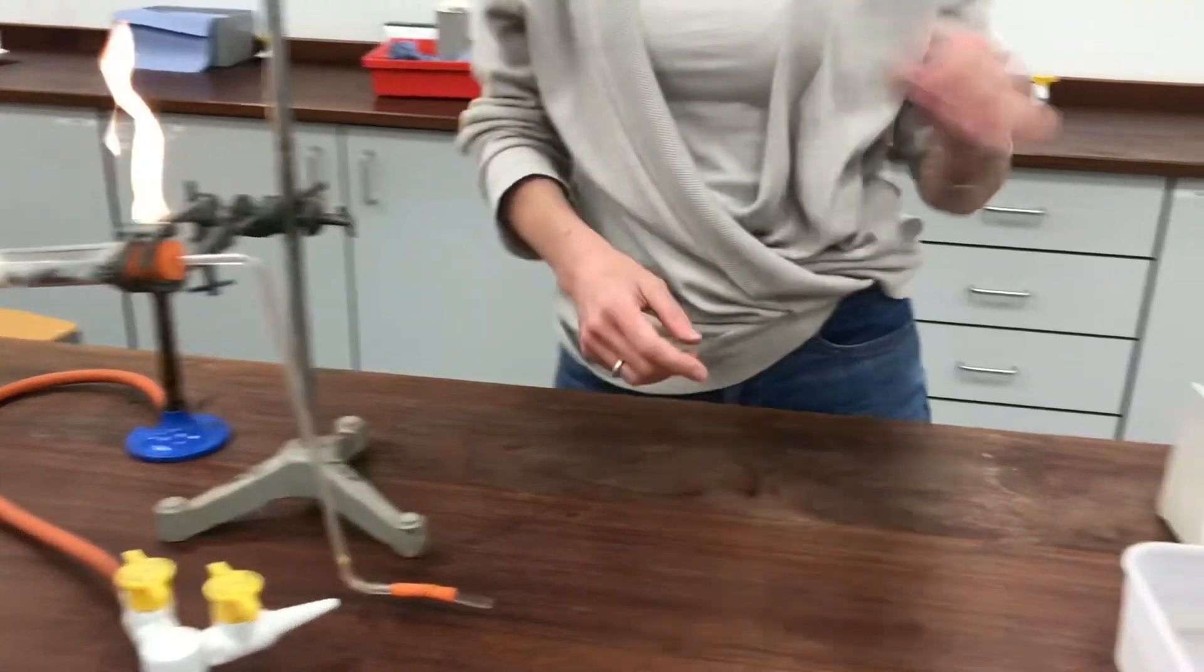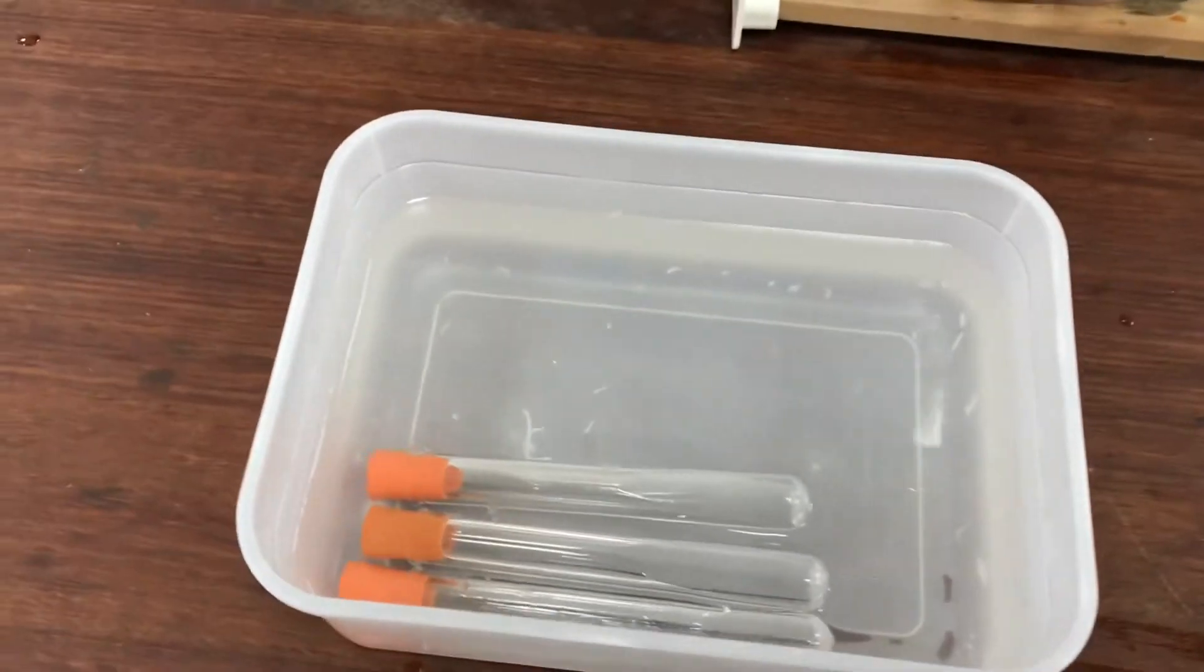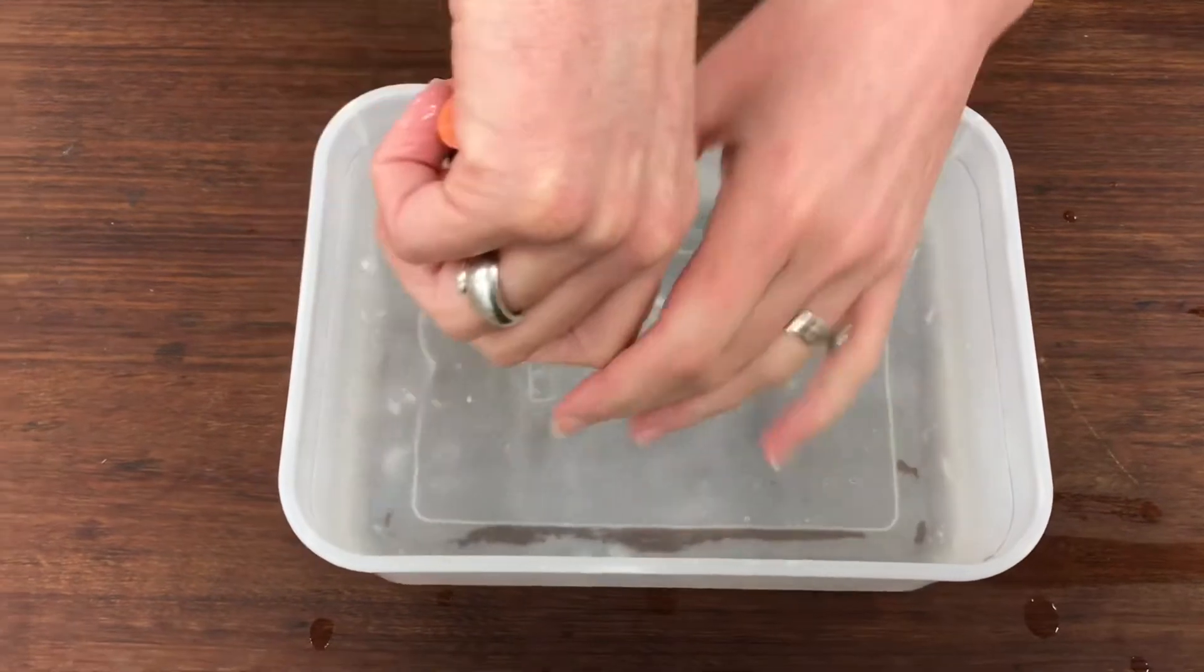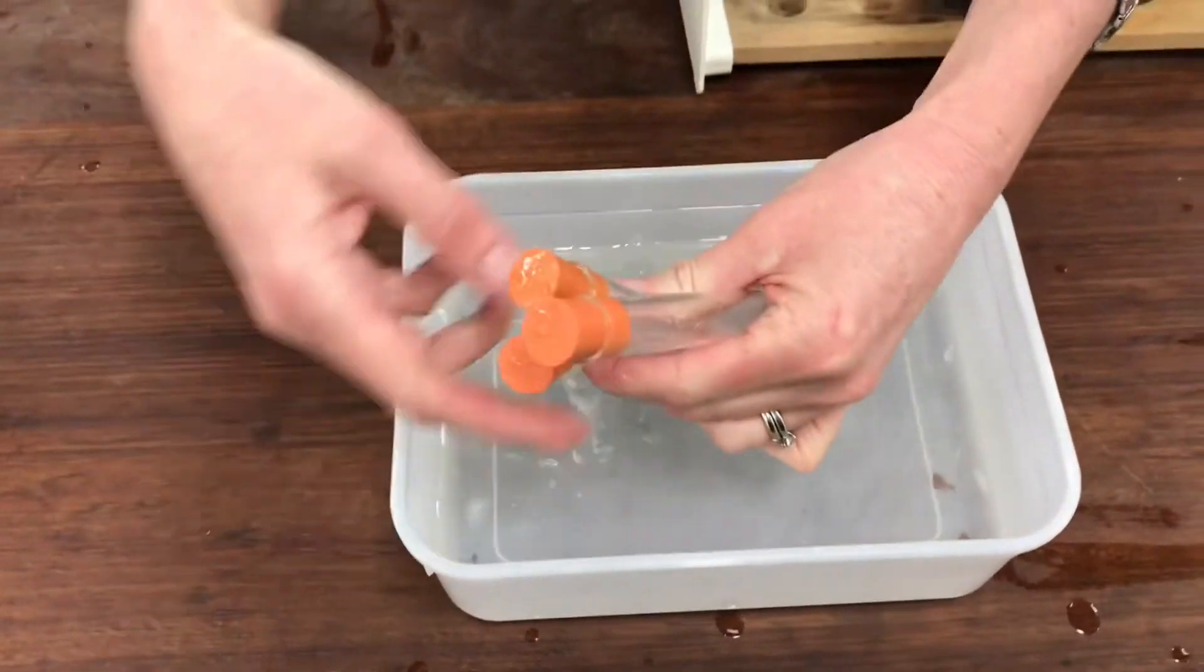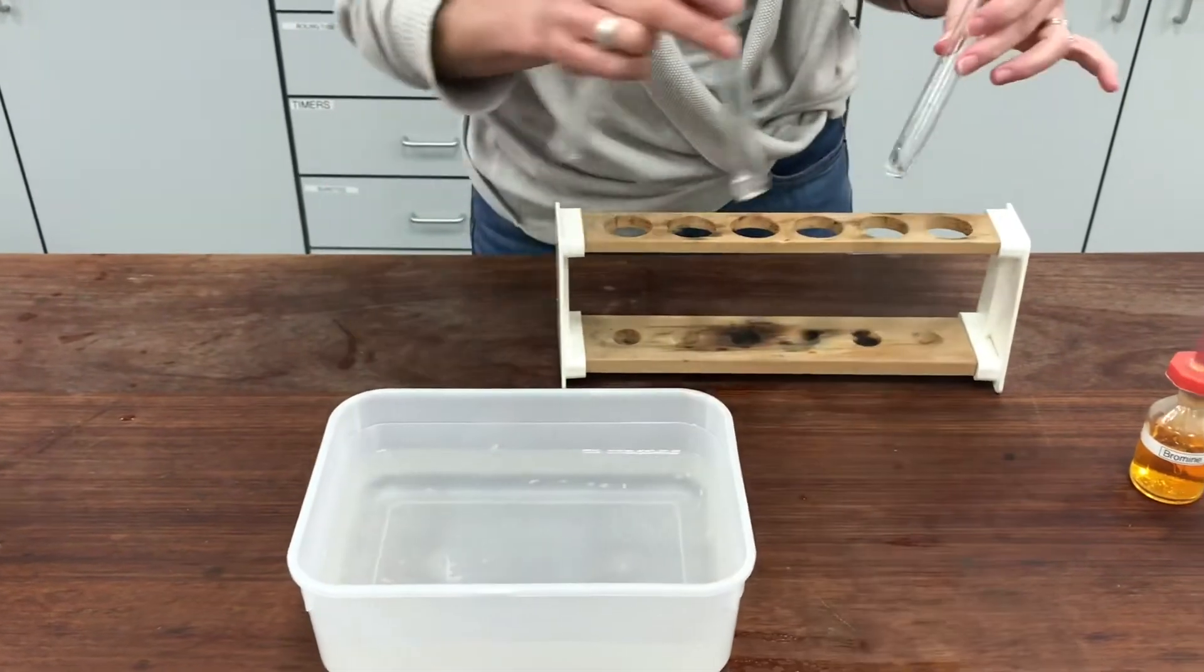OK, if we have a look now in the water bath. You can see there's some oily residue over the surface of the water bath which doesn't look very nice. But I've also managed to collect three tubes of gas here. So what I'm going to do is to test those using some bromine water.